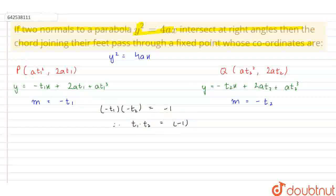Now we know that if t1 into t2 equals minus 1, then t1 and t2 must be the endpoints of a focal chord.